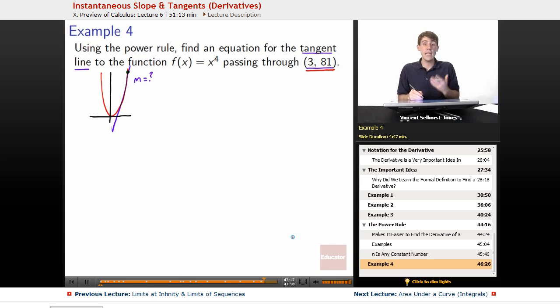Well, to find the slope at any given horizontal location, at any point, we wind up taking the derivative.